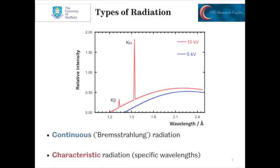This sealed X-ray tube gives us two types of radiation, which we see drawn schematically here. The blue shows us the continuous or bremsstrahlung radiation, while the red shows this plus the characteristic radiation at specific wavelengths. It is these specific wavelengths that we want to use in our diffraction experiment.